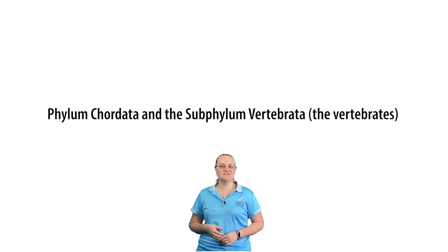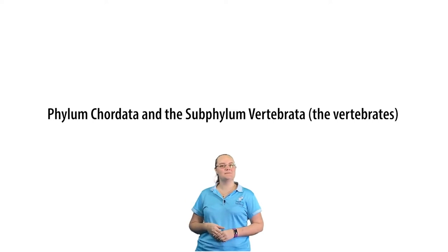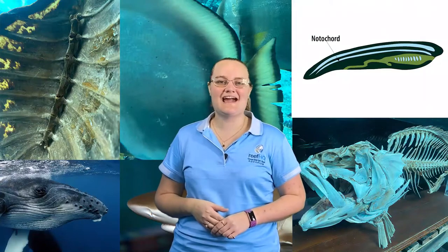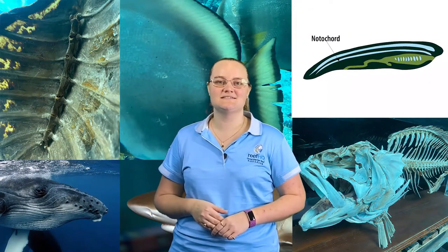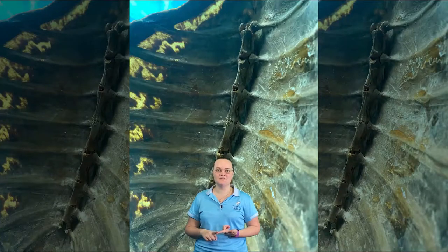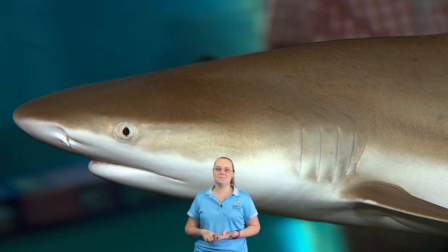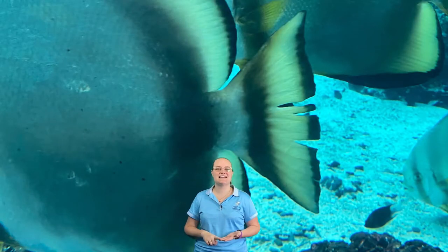This phylum is often termed as the vertebrates, as most species within the Chordata phylum have a vertebrae, or what a lot of people call a backbone. There are a number of key characteristics that animals within this phylum possess, including a notochord, a dorsal nerve cord, gill slits at some point in their life, a muscular post anal tail, and a skeleton.